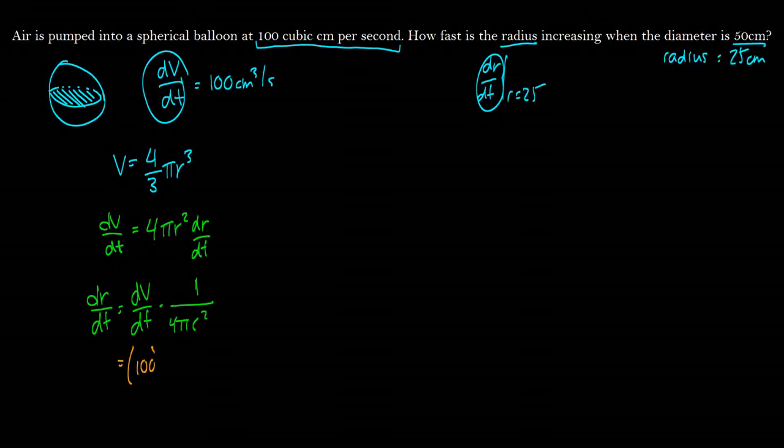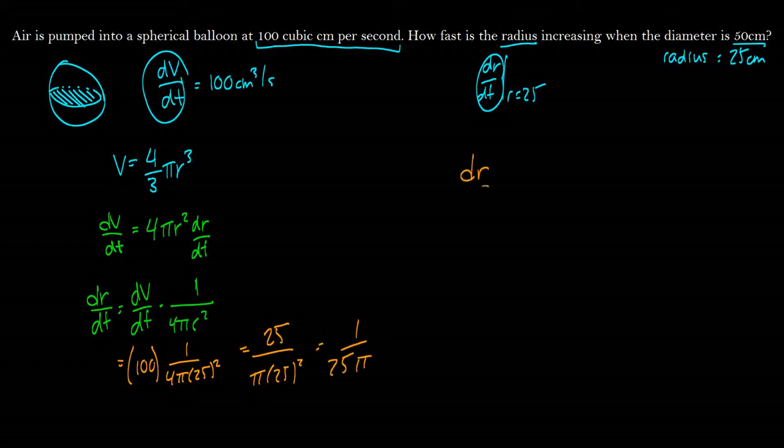And we just want to find out what dr/dt is when the volume change is 100, multiplied by 1 over 4 times pi 25 squared, because the radius is 25. So with the lovely powers of simplification, this is the same thing as 25 over pi 25 squared, which is the same thing as 1 over 25 pi. So dr/dt, when r is equal to 25 is equal to 1 over 25 pi centimeters cubed per second.